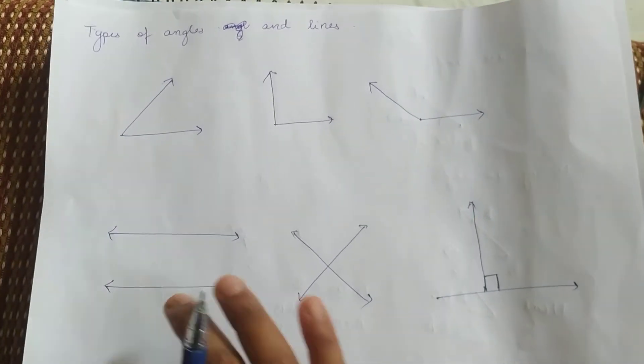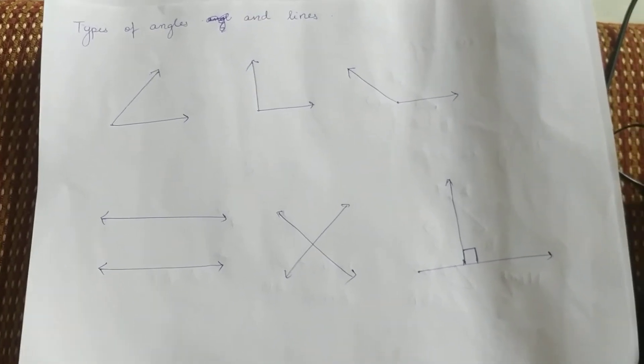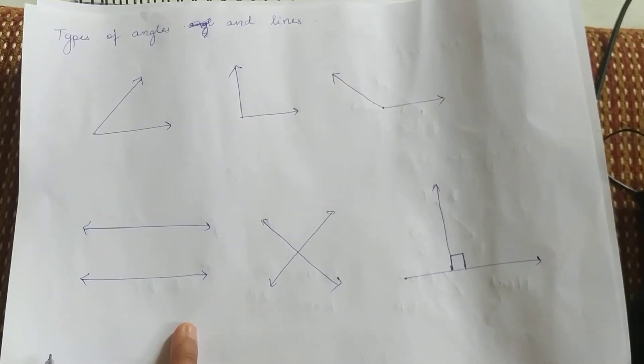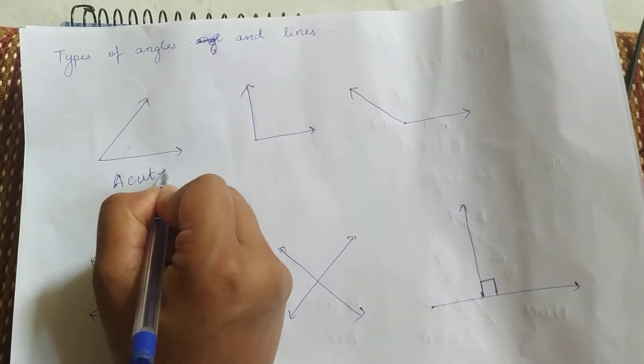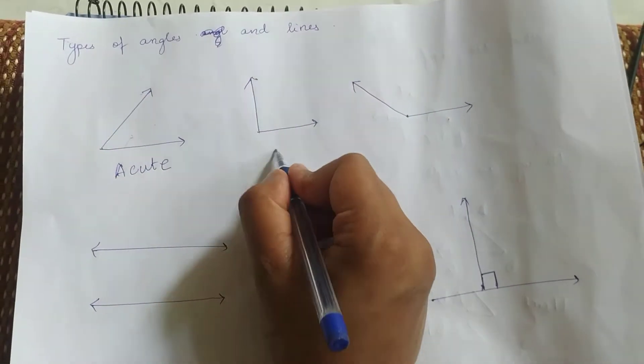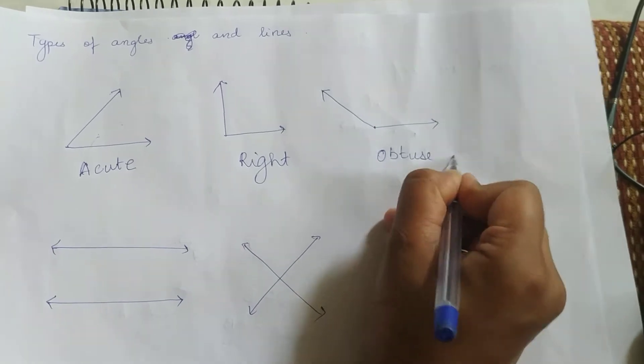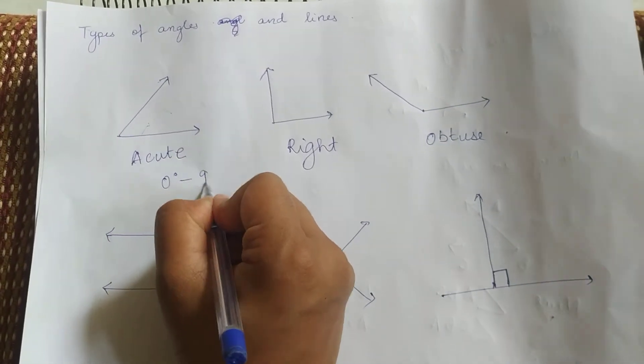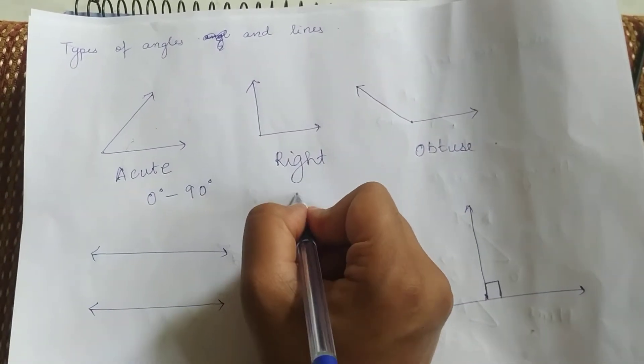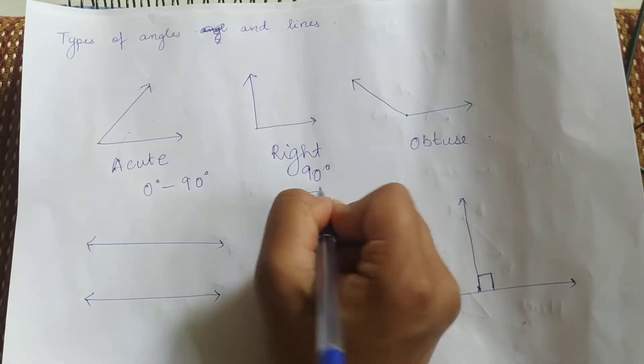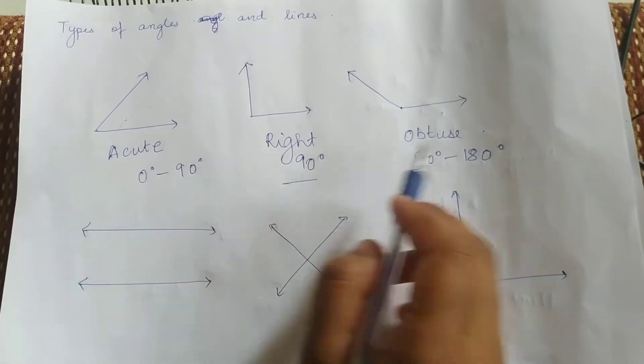Now let's move on to types of angles and lines. I know we studied this last year, but a quick revision about angles. Lines is a new part. This angle is called acute. This is right angle. And this is obtuse angle.